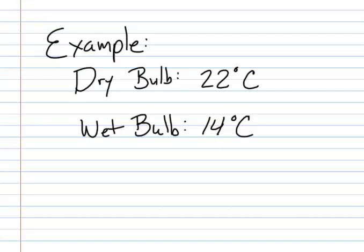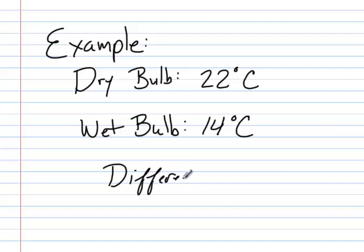The first thing we need to know is what is the difference in temperature between our dry bulb and our wet bulb. Our difference in temperature in this case is 22 minus 14, which is 8 degrees.